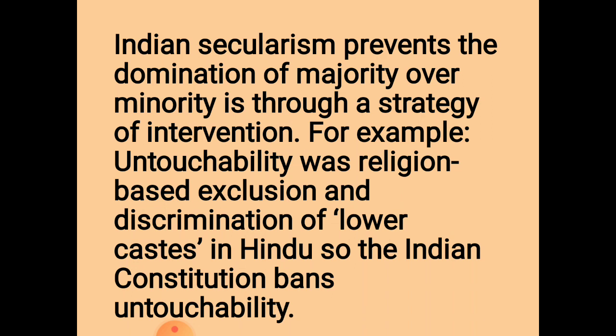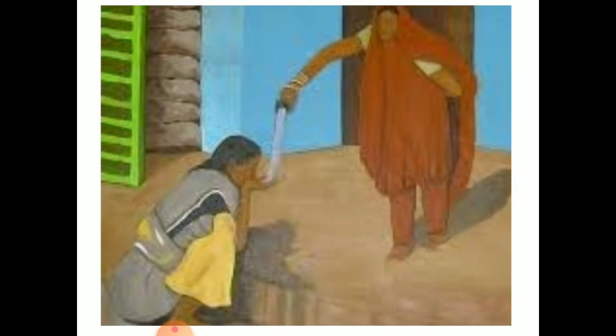In Hinduism, the caste system divides people into lower and upper castes. In this picture, you can see two ladies, one giving water to another, with a large gap maintained between them — depicting the social evil of untouchability that Hindus used to follow. This shows how upper caste people dominated lower caste people by not allowing them to be touched. To stop such things, the Indian Constitution has banned the system of untouchability, with the government participating to remove these social evils.